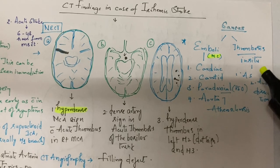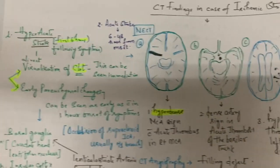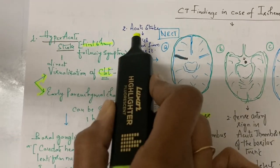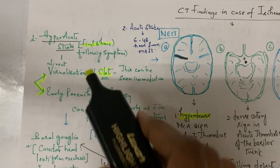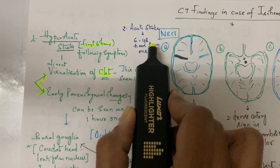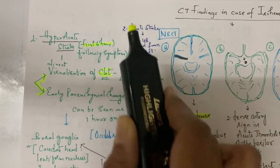Coming to different types depending upon duration: hyperacute is the first six hours following symptoms, acute is between six and 48 hours from onset. What are the findings in them?